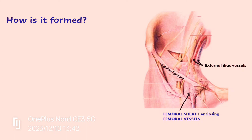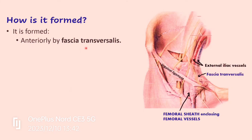The fascia transversalis is going to form the sheath as these vessels reach the thigh, and the posterior aspect of the sheath is contributed by the fascia iliaca, which covers the iliacus muscle. Here we have the iliacus and psoas muscle. So the femoral sheath is formed anteriorly by fascia transversalis and posteriorly by fascia iliaca.